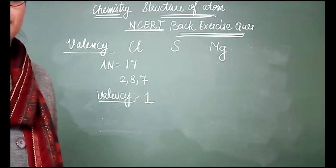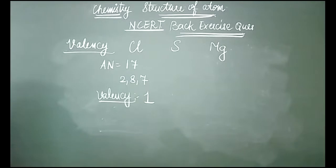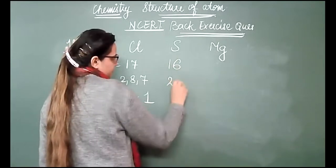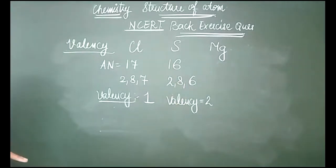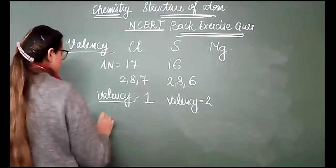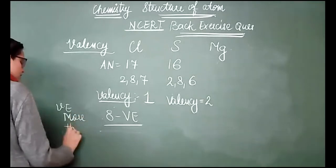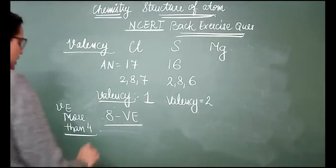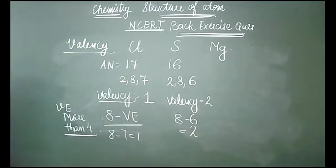For sulfur, the atomic number is 16 and electronic configuration is 2,8,6. The valency is 2 because it needs 2 electrons to complete the octet. You can also find valency as 8 minus valence electrons when valence electrons are more than 4: 8 minus 7 gives 1 for chlorine, and 8 minus 6 gives 2 for sulfur.